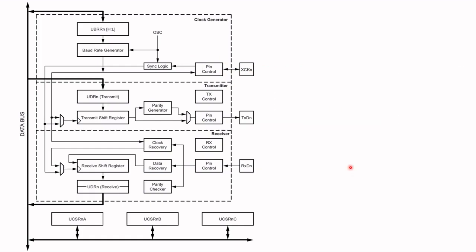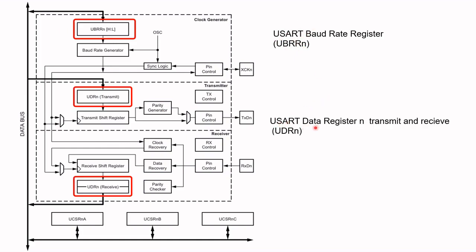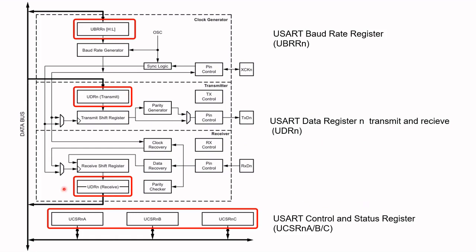As mentioned earlier, there are three main parts of the USART: the clock generator, the transmitter, and the receiver. With each of these parts there are registers associated with them. The first is the USART baud rate register, or UBRR N. Then there is the USART data register for receive. And at the bottom left there is the USART control status register — that is UCSR A, UCSR B, and UCSR C.